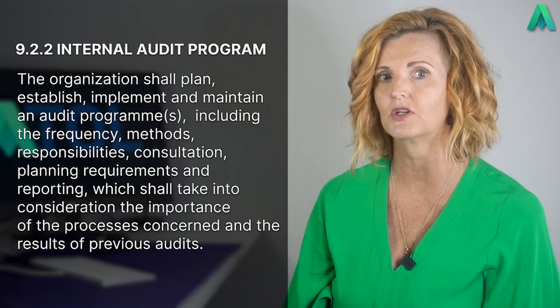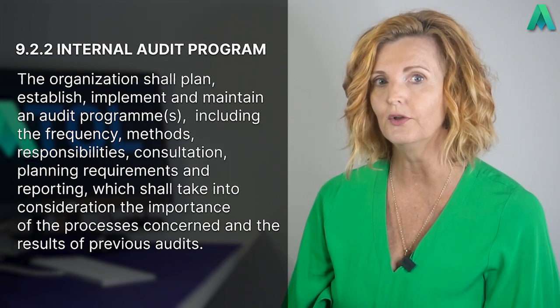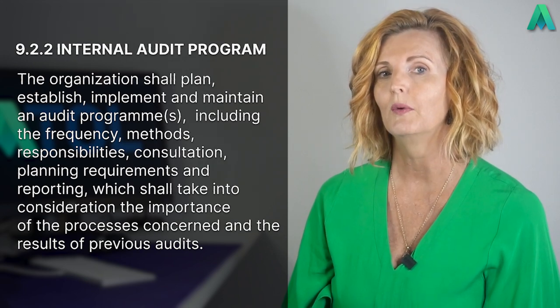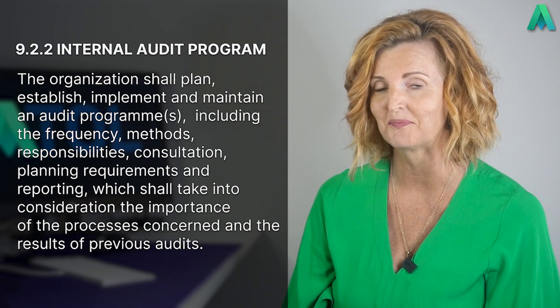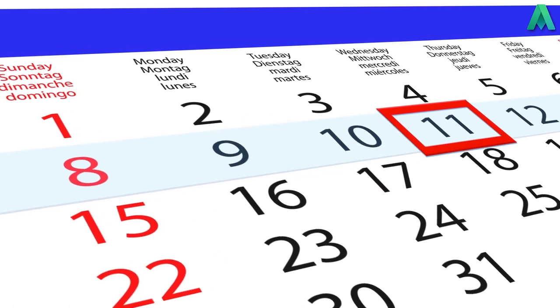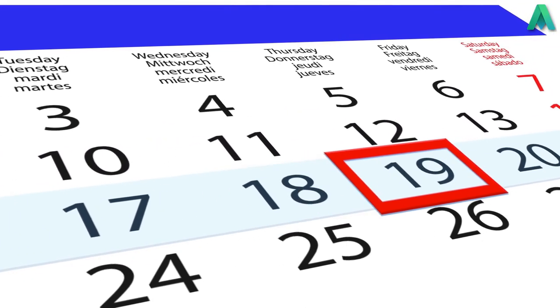We then move on to the second subclause of 9.2.2 internal audit program, where it states that the organisation shall plan, establish, implement and maintain an audit program, including the frequency, methods, responsibilities, consultation, planning requirements and reporting, which shall take into consideration the importance of the processes concerned and the results of previous audits. This is pretty clear that we are required to develop an audit program, sometimes referred to as an audit schedule. The audit program should be for all of the audits planned over a period of time. Normally within businesses, you see this over a period of 12 months. For myself, as a certification auditor, my audit programs for clients are over three years, as this ties in with a three-year certification cycle.